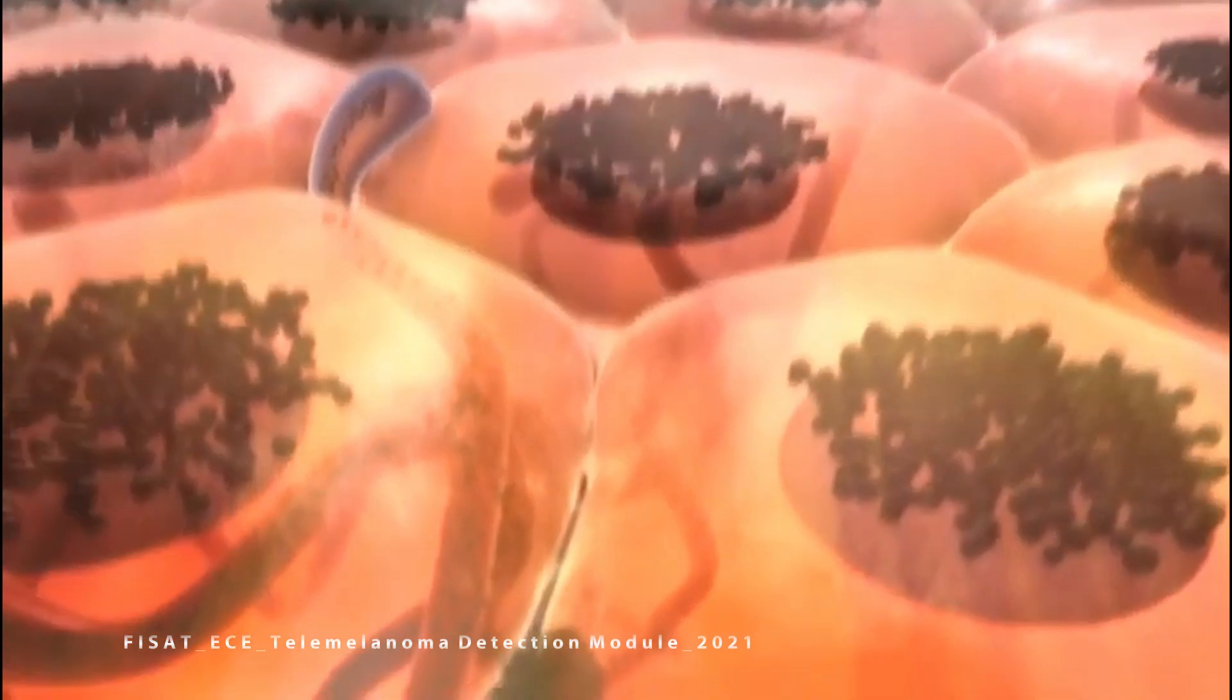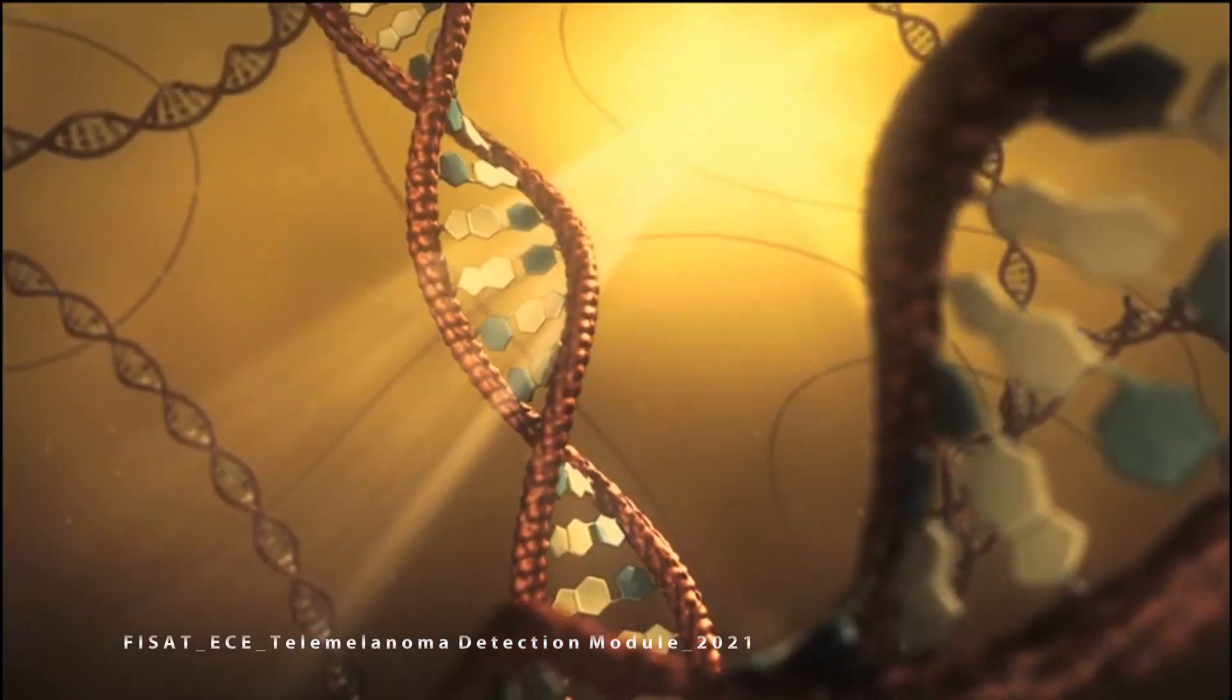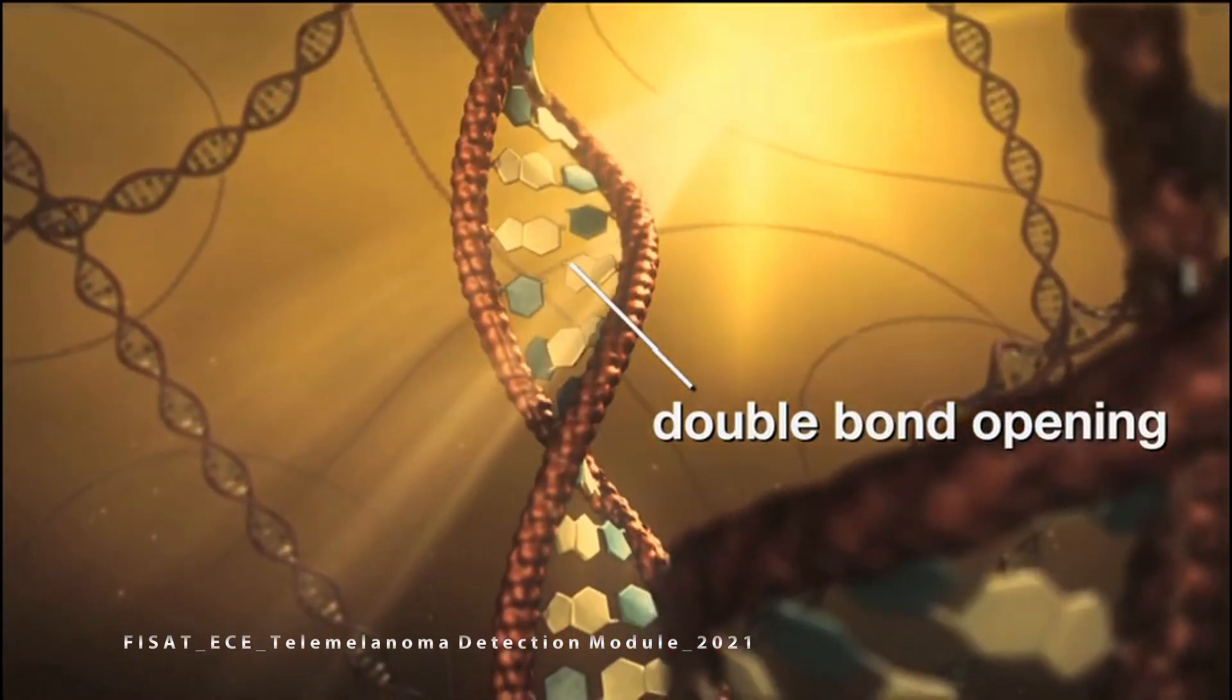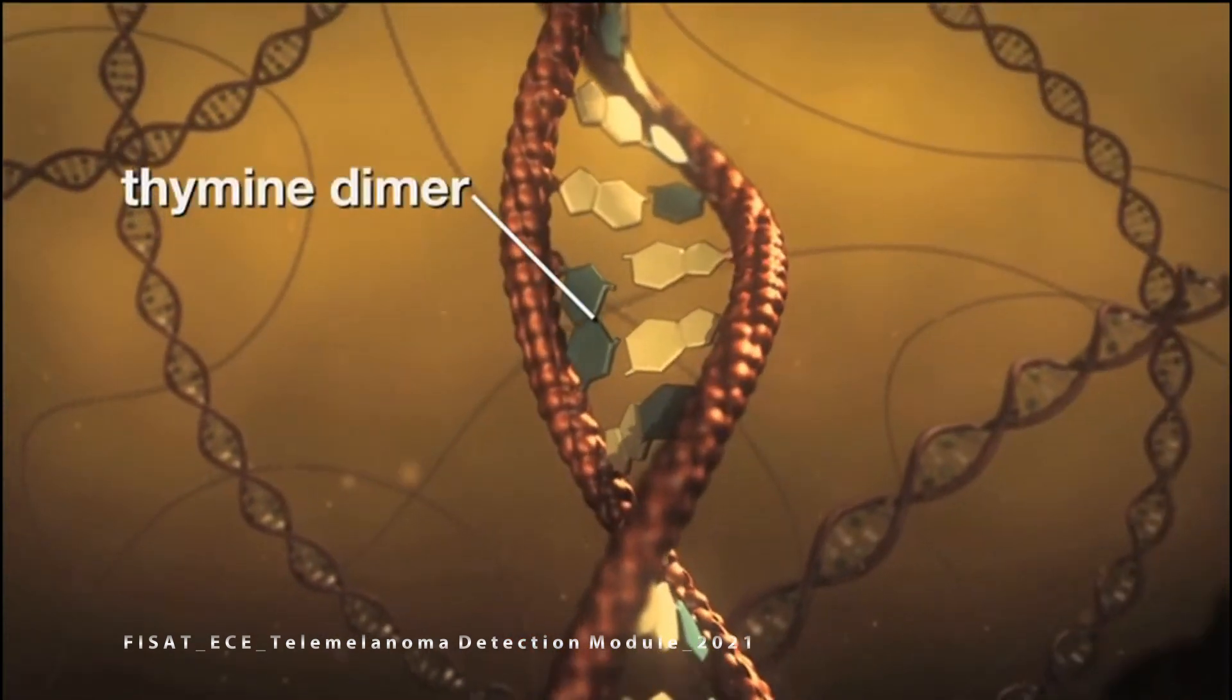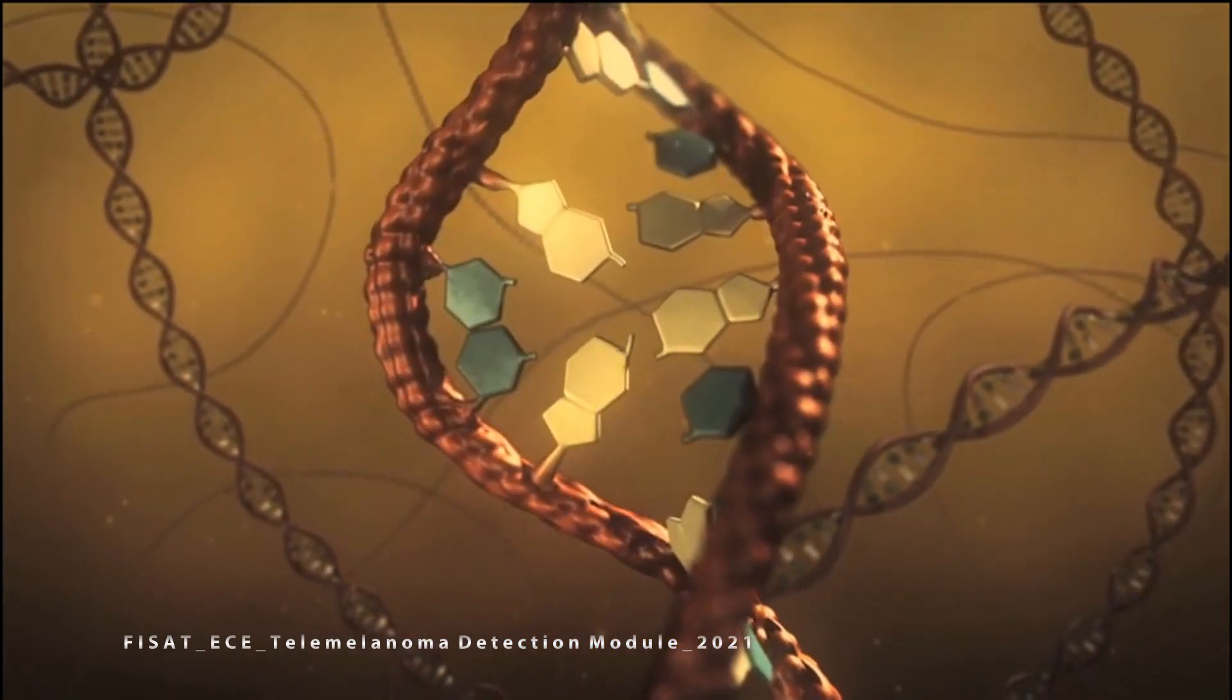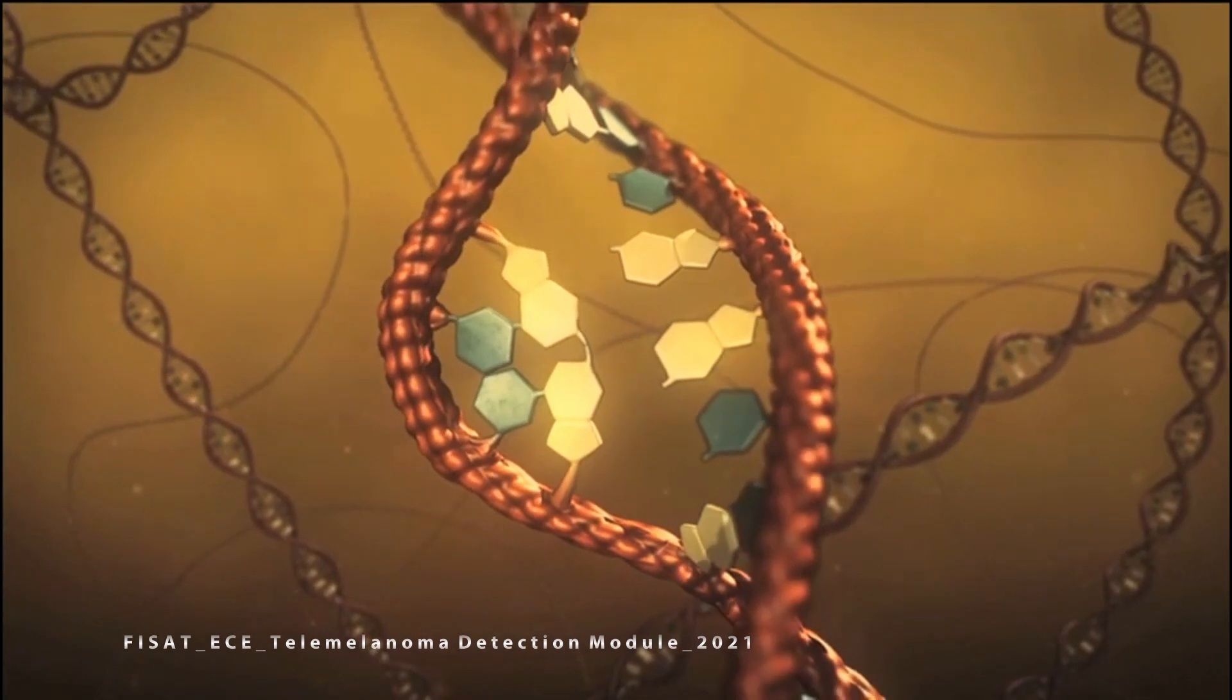Ultraviolet rays are clearly a major cause of melanoma. UV rays can damage the DNA in skin cells. Thymine dimers are formed as covalently bonded complexes of two adjacent thymines on a single strand of DNA.